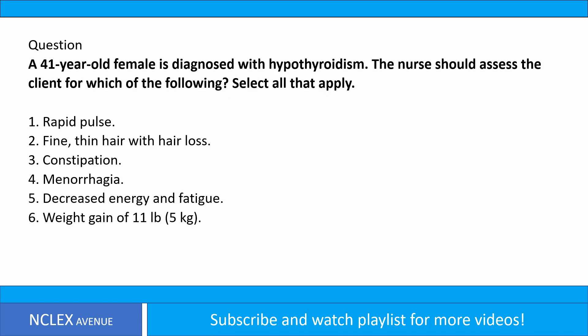Question. A 41-year-old female is diagnosed with hypothyroidism. The nurse should assess the client for which of the following? Select all that apply. 1. Rapid pulse. 2. Fine, thin hair with hair loss. 3. Constipation. 4. Menorrhagia. 5. Decreased energy and fatigue. 6. Weight gain of 11 pounds (5 kilograms).